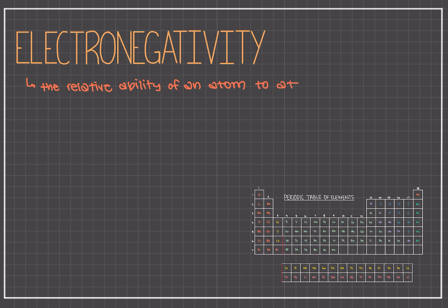These elements of higher electronegativities are found in the upper right corner of the periodic table. Elements with lower electronegativities tend to lose electrons in chemical reactions and are found in the lower left corner of the periodic table.